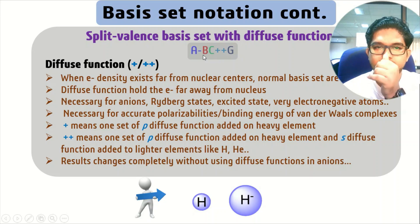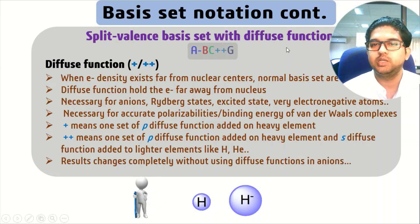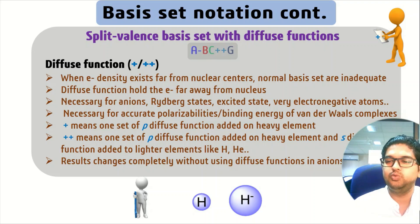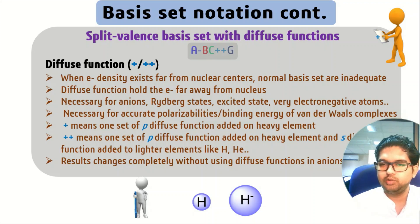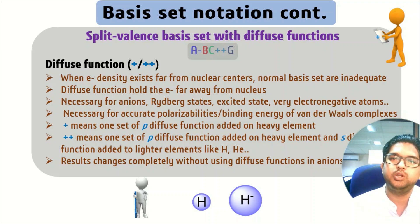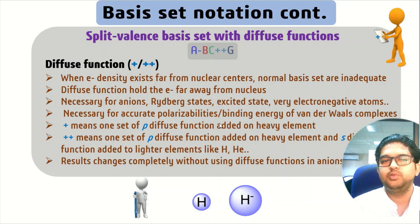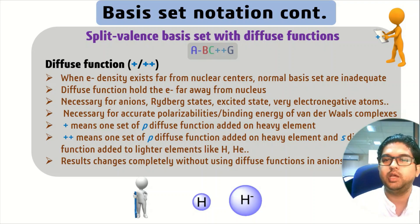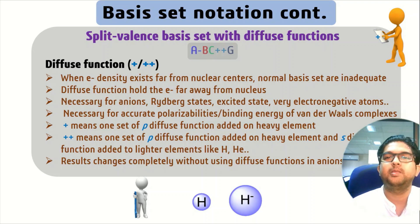Now we have the diffuse function. Diffuse functions address the electron density when it exists far away from the nuclear center. In those cases, whatever basis set we are using will not give adequate information. We have to introduce diffuse functions. A diffuse function holds the electron density a little away from the nucleus. For ionic systems, excited states, electron transitions, and electronegative element cases, we have to use this diffuse function.